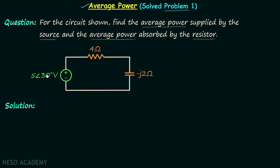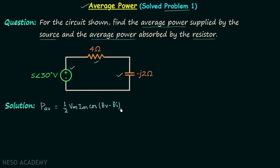You can see that this one here is the source and this one here is the resistor, and apart from these two elements we also have one capacitor — all three are connected in series. We will first focus on finding the average power supplied by the source, and we know the average power is equal to half Vm·Im·cos(θv − θi).